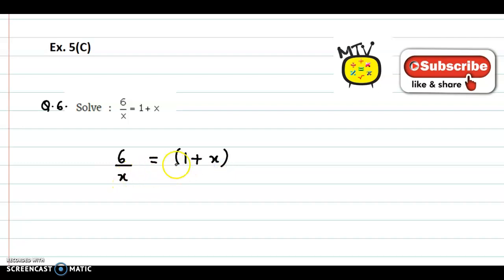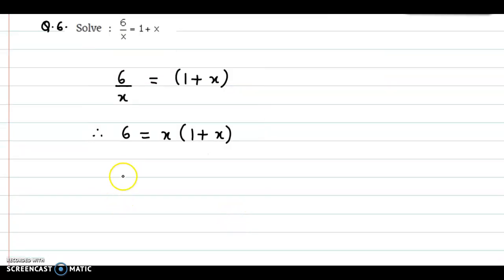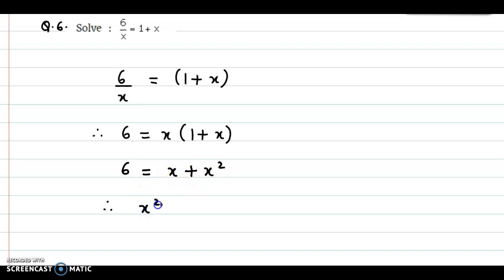Now, we multiply X onto the right-hand side. So we have 6 is equal to X into 1 plus X. Now we open the brackets on the right-hand side. X into 1 is X, plus X into X, that would be X square. So rearranging the terms, we get the quadratic equation as X square plus X minus 6 is equal to 0.